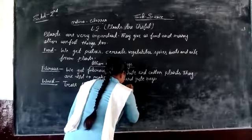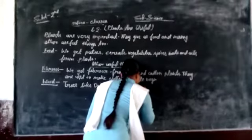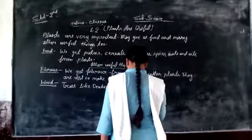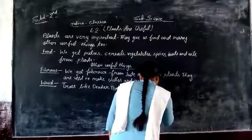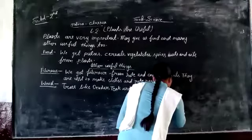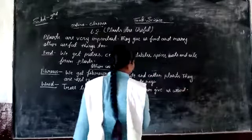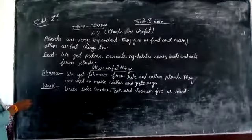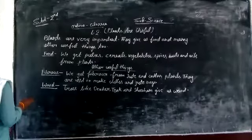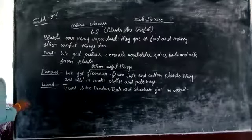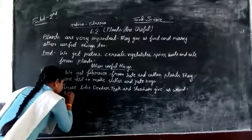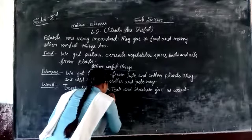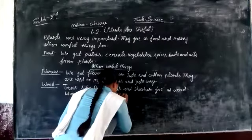Trees like Teak and Sesum give us wood. Wood is used to make furniture.